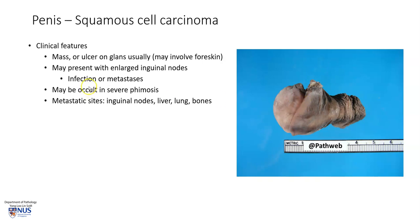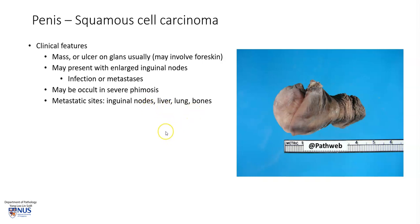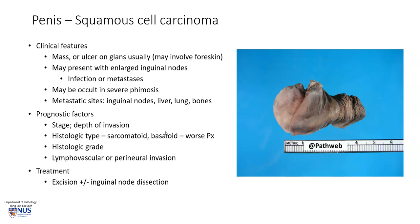It may also present as enlarged inguinal lymph nodes, and this is not necessarily always due to metastasis — it can be because of infection. In cases of severe phimosis, a mass or ulcer may actually be occult and not picked up until later. This tumor tends to metastasize to inguinal nodes and also distant sites, including liver, lung, and bones.